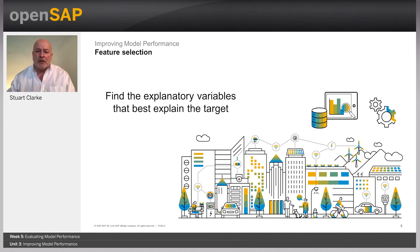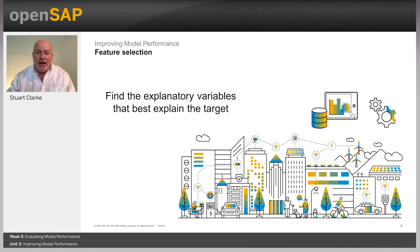Feature selection is the process of identifying the subset of explanatory variables that best explain the relationship with the target variable. There are several ways to accomplish this: you can use domain knowledge to select variables with a higher impact on the target variable, use simple data visualizations to understand relationships between variables, or use statistical metrics such as the p-value or variable contributions in the model.